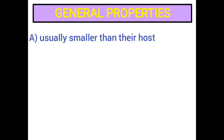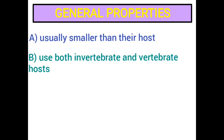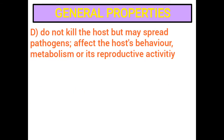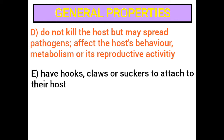General features of parasites: Parasites are usually smaller than their host. Parasites use both invertebrates and vertebrate hosts. Adult parasites may live on the host, in the host, or feed on a host occasionally. Parasites generally do not kill the host but may harm the host indirectly by spreading pathogens, which may affect the host's behavior, metabolism, or its reproductive activity. Many parasites have hooks, claws, or suckers to attach to their host.